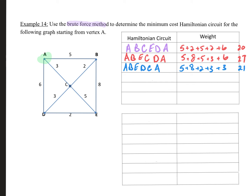Now A → C routes. First: A → C → B → E → D → A. Edge weights: 3 + 2 + 8 + 2 + 6 = 21. Checking whether this is a duplicate of a previous route — comparing letter sequences, A → C → B → E → D → A vs. A → B → E → D → C → A — they are not duplicates, so this is a unique route costing 21.